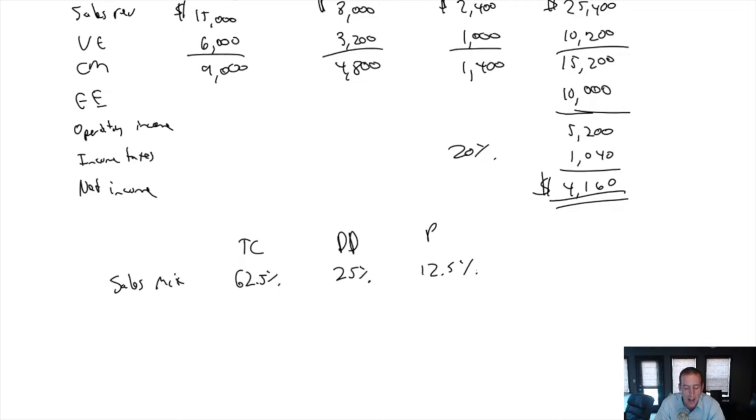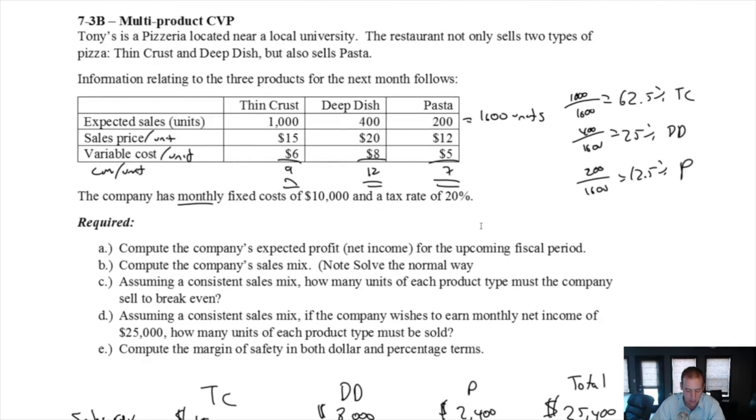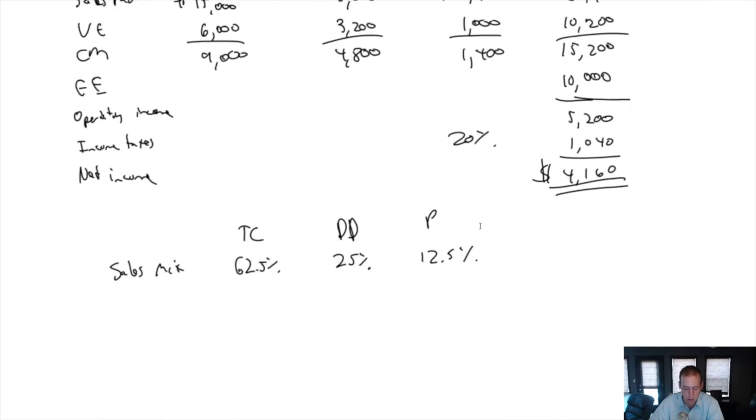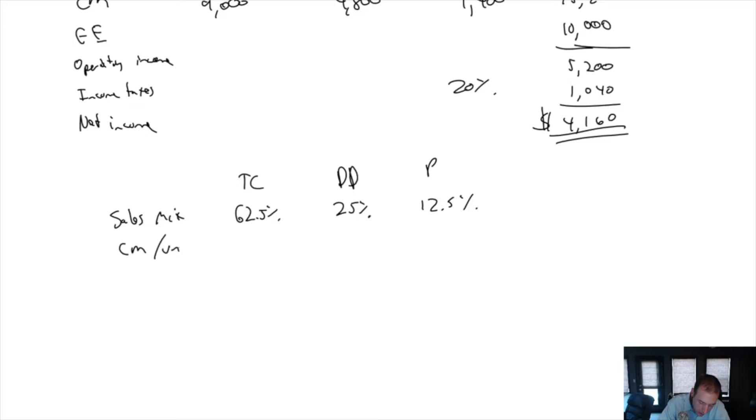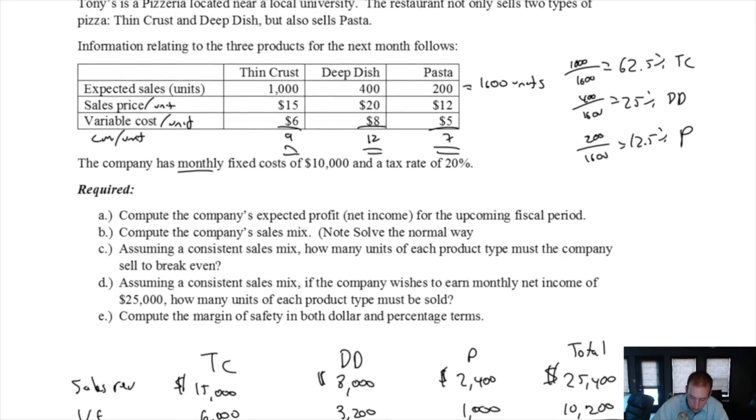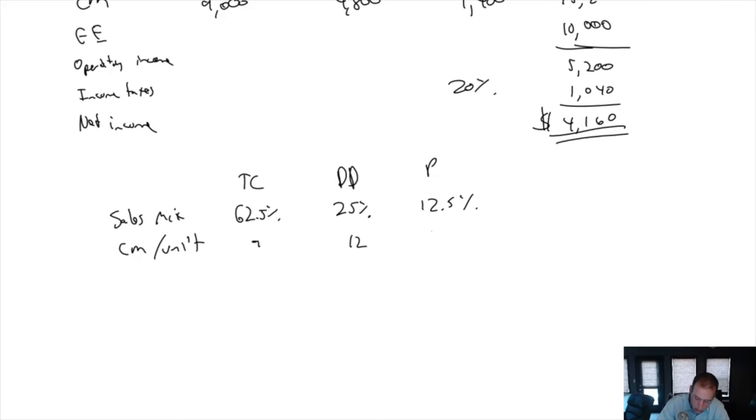Now remember why we're doing this. We want to figure out our weighted average contribution margin per unit. We know our contribution margin for each of these units, $9, $12, and $7. But we need to know what the average customer is putting into our till in terms of contribution margin. And that means we weight them according to which units we sell the most of. The one that should have the most weight is the 9, the second most weight is the 12, and the one with the least weight is the 7.